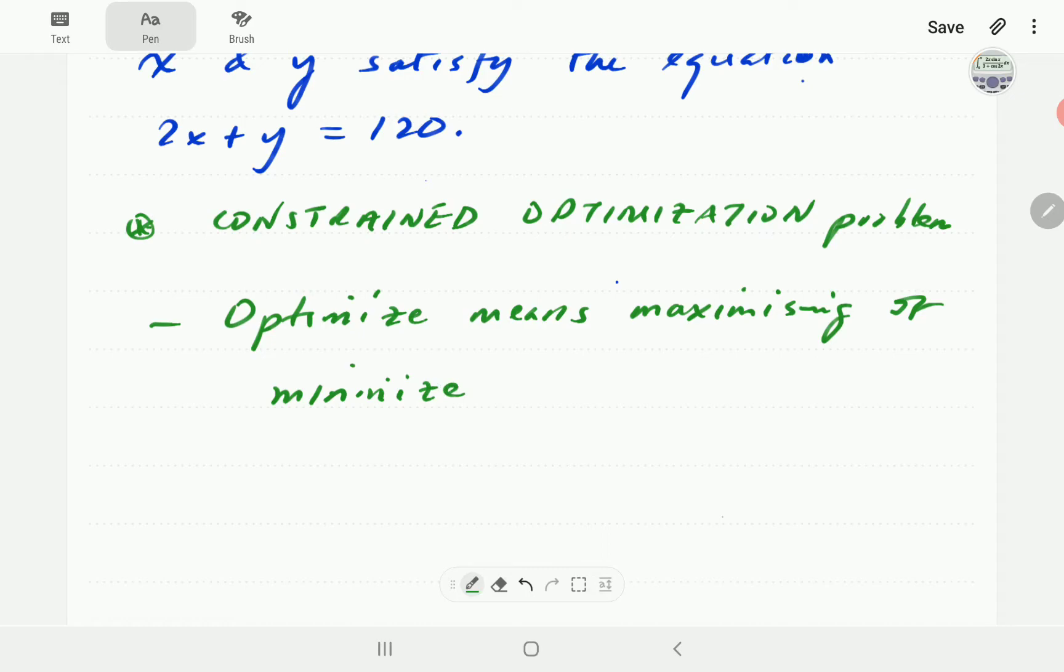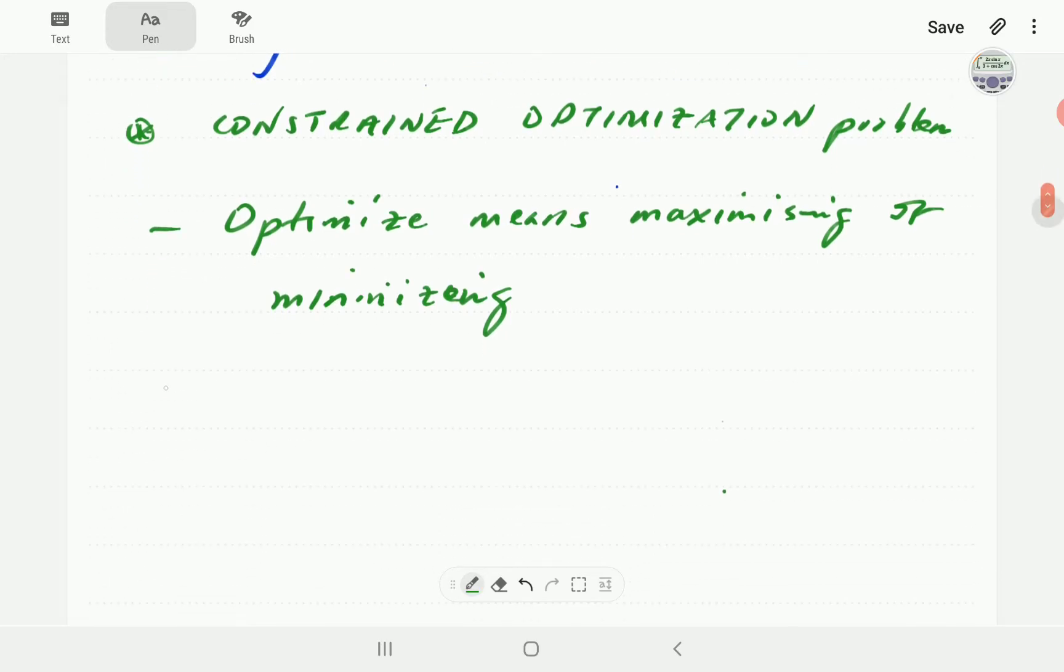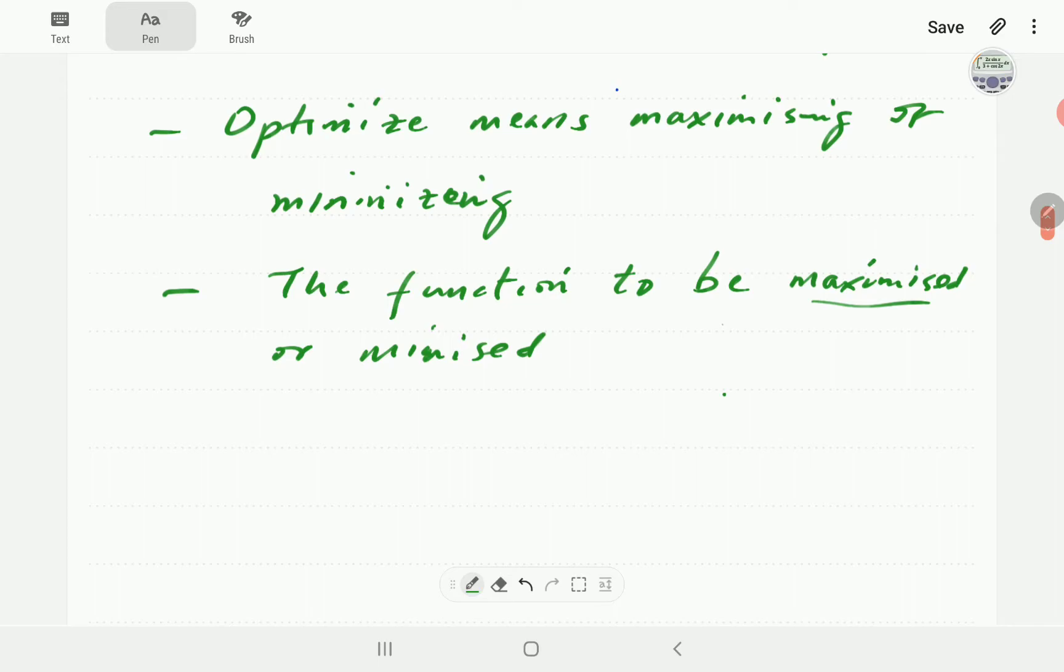The quantity or function that we maximize or minimize is called an objective function. So the function to be maximized or minimized is called the objective function. Typically in one problem we are either just going to be maximizing; we won't be maximizing and minimizing in the same problem.